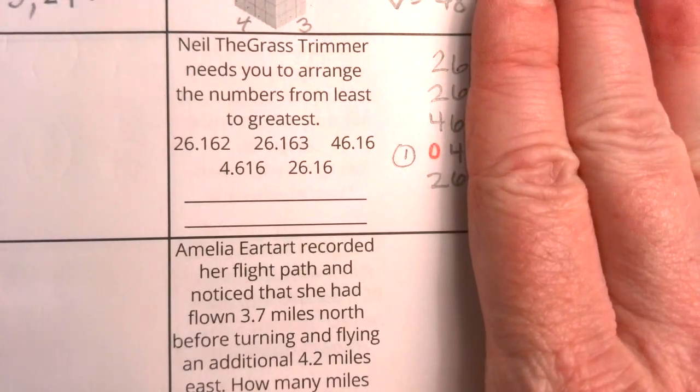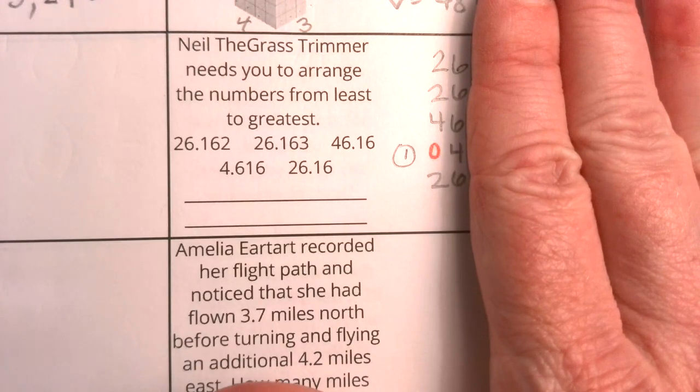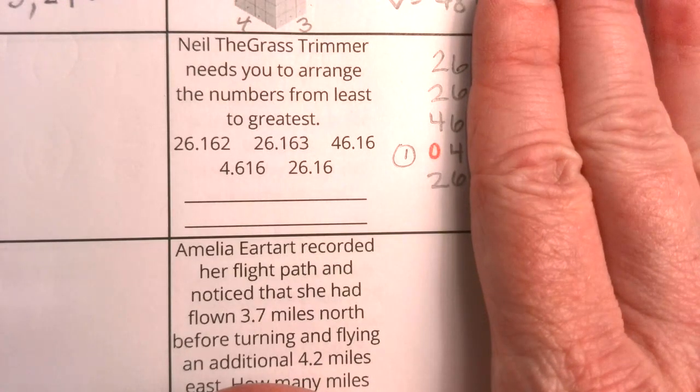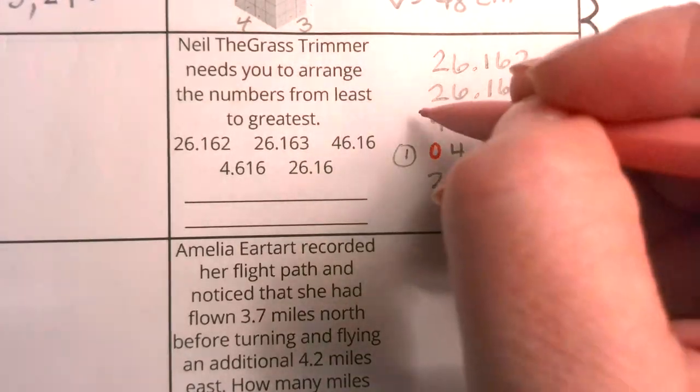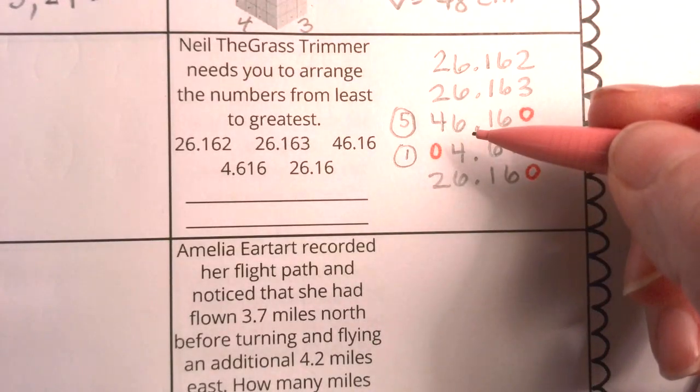I also know which one is going to be the greatest. Because there's only one value whose whole number is for sure the greatest. It's in the 40s. We have 46. So I know that this one is actually going to be the last number in my list, which is like the fifth number in my list.